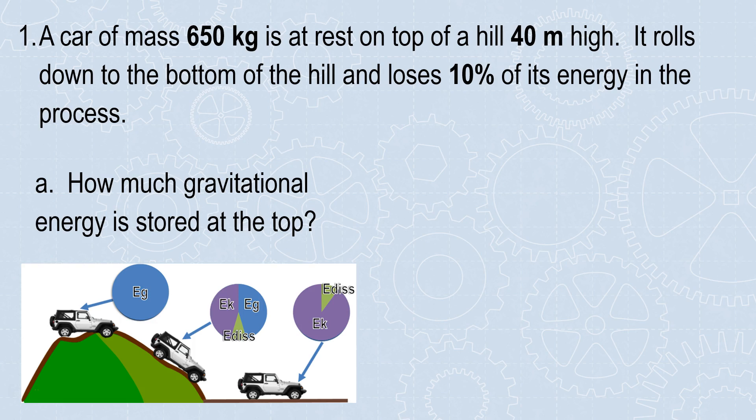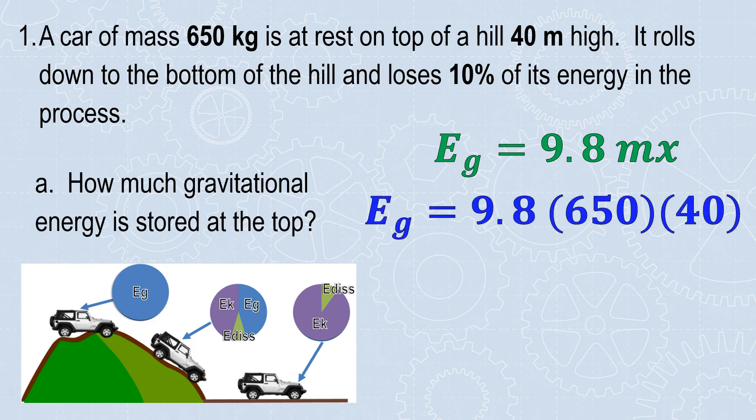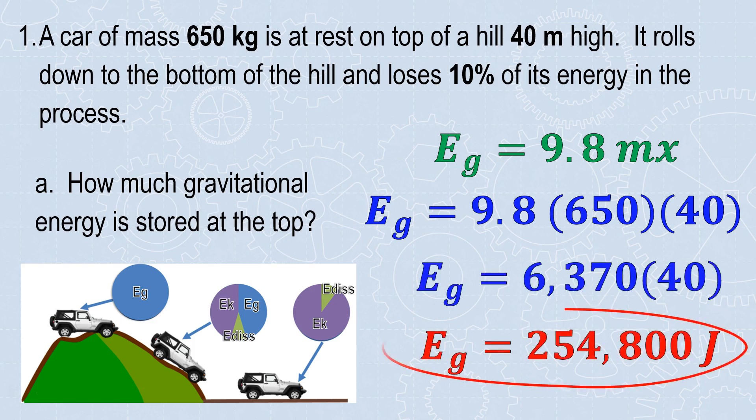Here we're going to find the gravitational energy stored at the top. We know it's EG because our pie chart says so. We know it's EG because it's asking for the gravitational energy. Plug in what you know, mass is in kilograms. Always check your energy toolbox for units and variables. My distance, my height off the ground is in meters, 40 meters. Plug it in and now we just have to multiply. So it means we started with 254,800 joules at the top. That's both our gravitational energy and our total energy throughout.